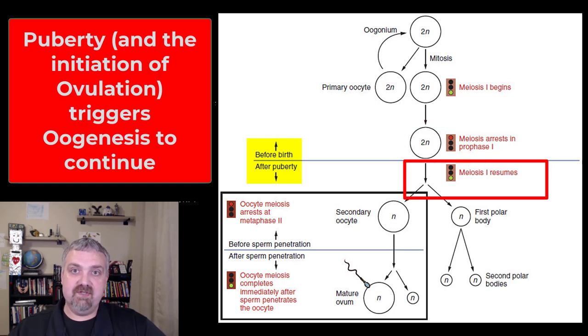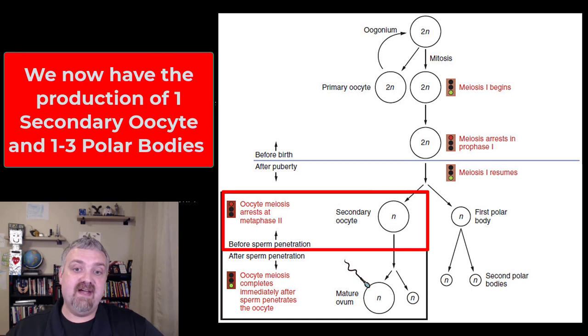Then we have the initiation of ovulation. The first time that the ovarian cycle works and we have that spike in luteinizing hormone leading to a follicle rupturing out of the ovary is going to trigger this for the rest of a woman's reproductive years until menopause. This process will occur every 28 days. Once the girls reach puberty, now meiosis one resumes and we're going to have our primary oocyte finally becoming a secondary oocyte.